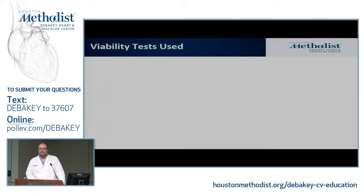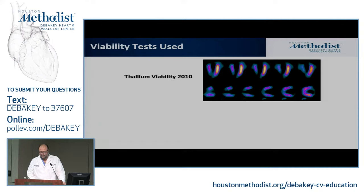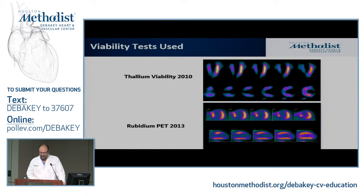Why is there waning interest in SPECT for viability? Because of inherent limitations — mainly the radioisotope energy. Here is a patient I took care of a few years ago. He had thallium viability, and clearly the whole anterior-inferior wall is almost absent. The only wall that took up some thallium was the lateral wall. This patient kept having heart failure and shortness of breath. Later on, we had PET with rubidium — you can see how different the images are, and you can see the extent of viability this patient has been having. There are technical limitations with SPECT that have been limiting us.